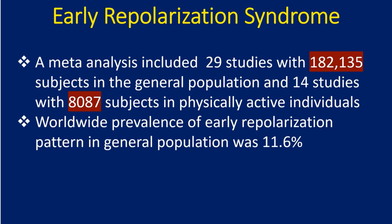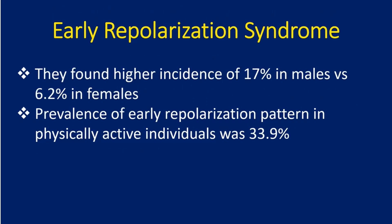Worldwide prevalence of early repolarization pattern in the general population was 11.6%. They found a higher incidence of 17% in males versus 6.2% in females. Prevalence of early repolarization pattern in physically active individuals was 33.9%.